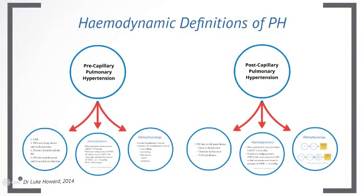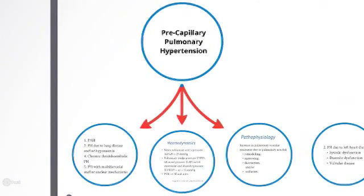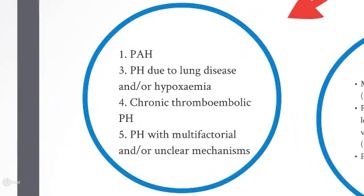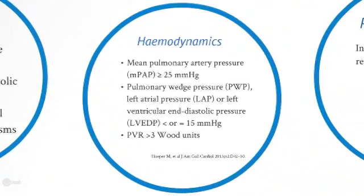Pulmonary hypertension, as well as being classified by disease subtype, can also be classified according to the hemodynamic status in pulmonary hypertension. Let's first consider precapillary pulmonary hypertension. As previously mentioned, precapillary pulmonary hypertension consists of categories 1, 3, 4, and 5 of the PH classification. The hemodynamic definition requires a mean pulmonary artery pressure at rest of greater than or equal to 25 mmHg.